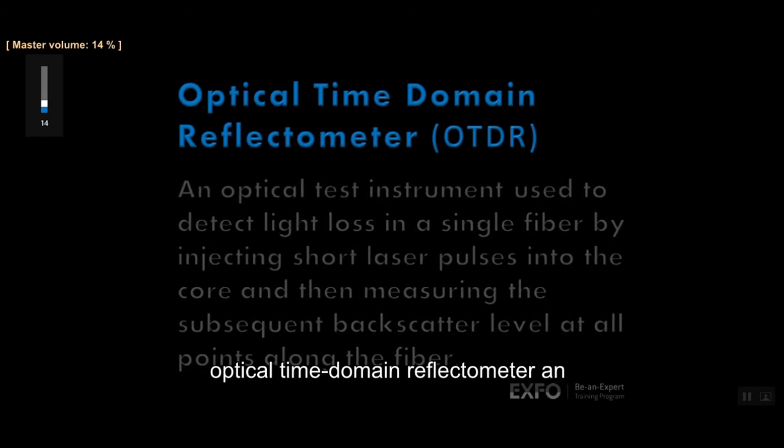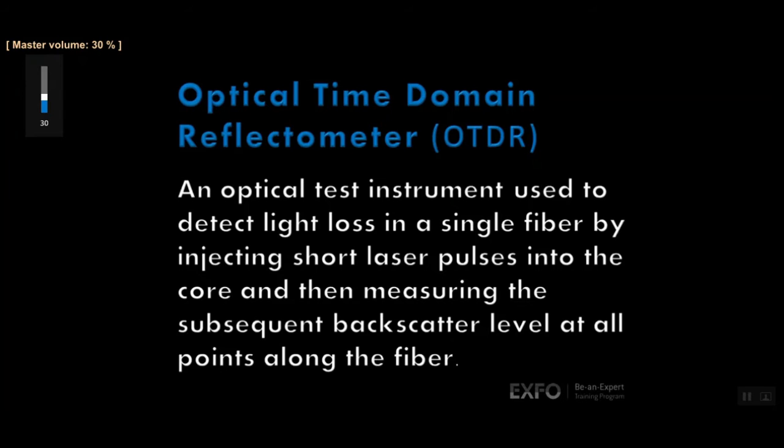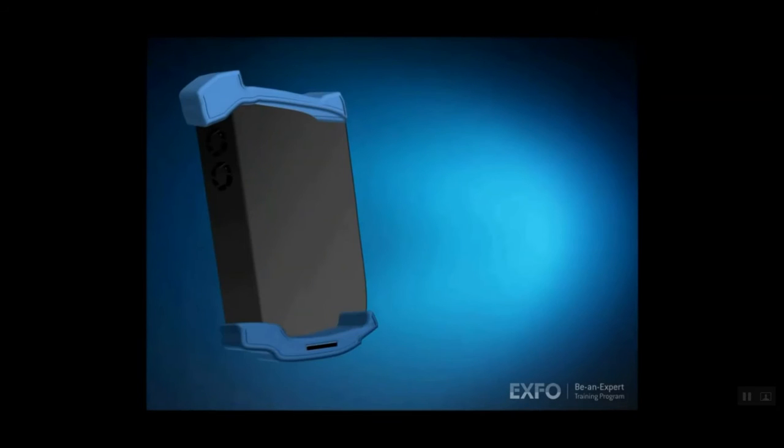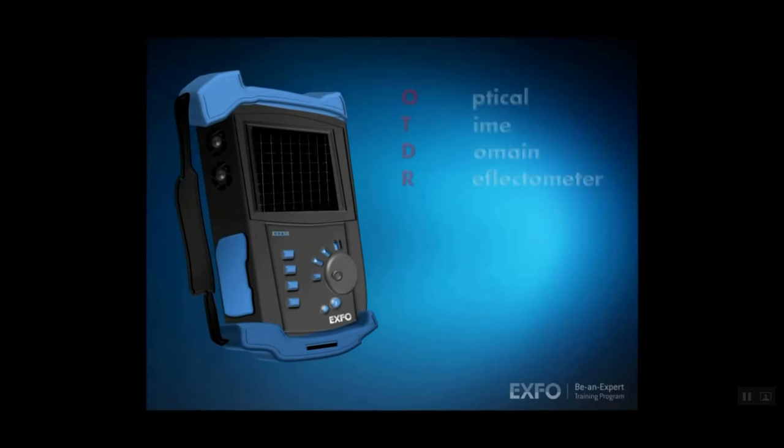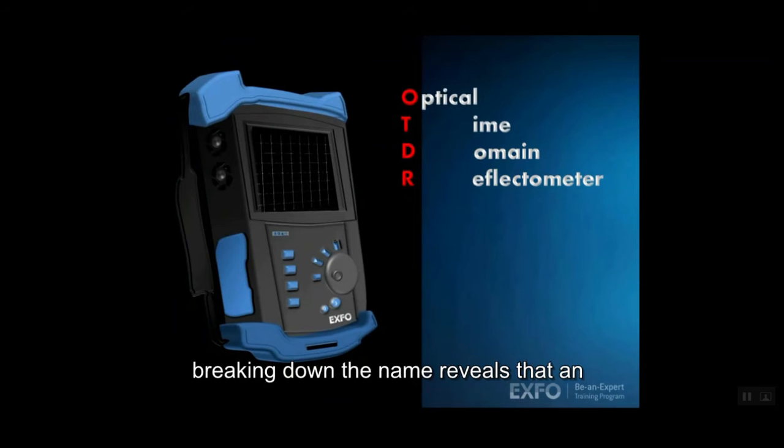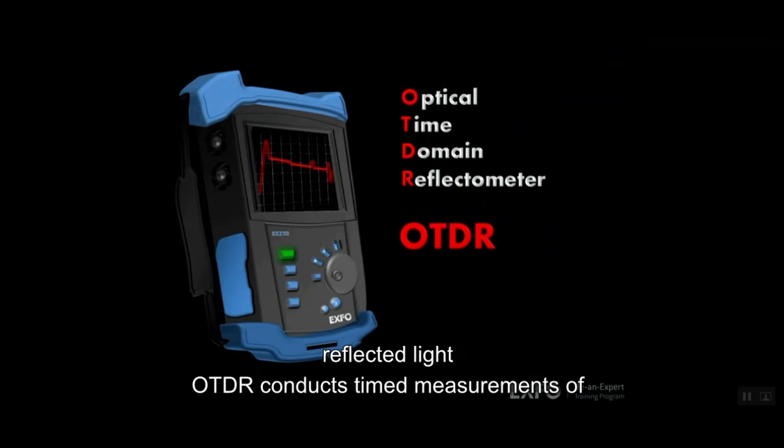Optical Time Domain Reflectometer: an optical test instrument used to detect light loss in a single fiber by injecting short laser pulses into the core and then measuring the subsequent backscatter level at all points along the fiber. Breaking down the name reveals that an OTDR conducts timed measurements of reflected light.